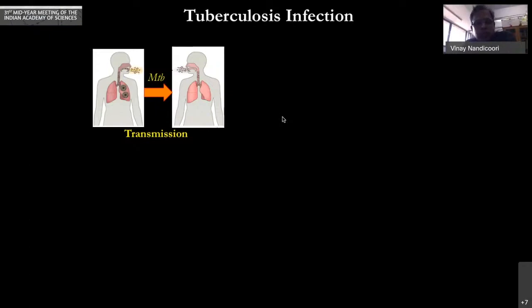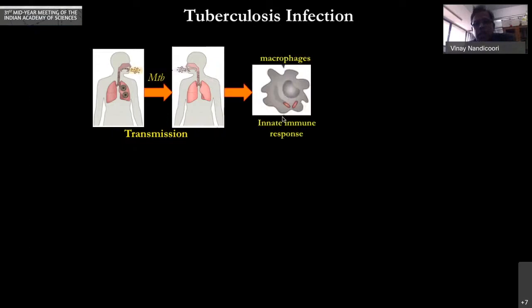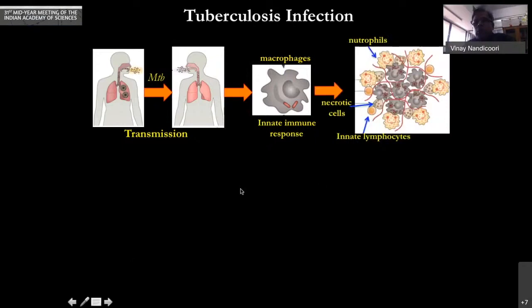Mycobacterium tuberculosis infection occurs when we are exposed to somebody who is infected and coughing. The bug is then taken up by the innate immune system and is surrounded by multiple immune cells and contained. This particular stage is called granuloma.